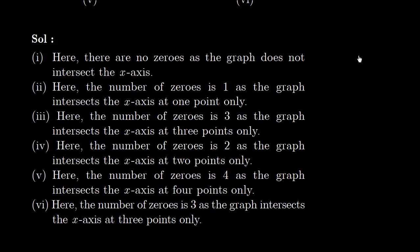And according to this solution: the first graph has no zeros, the second graph has 1 zero, the third graph has 3 zeros, the fourth graph has 2 zeros, the fifth graph has 4 zeros, and the sixth graph has 3 zeros.